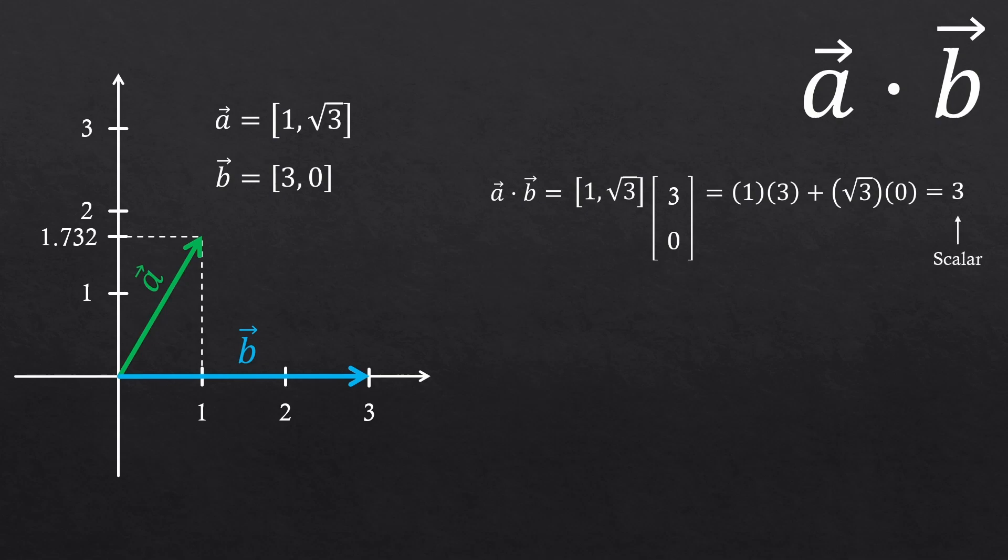By the way, three is a scalar, right? Scalar just means a number. So this is why the dot product is also called scalar product, because it gives a scalar. Anyway, let's talk about this math that gave us the answer three.